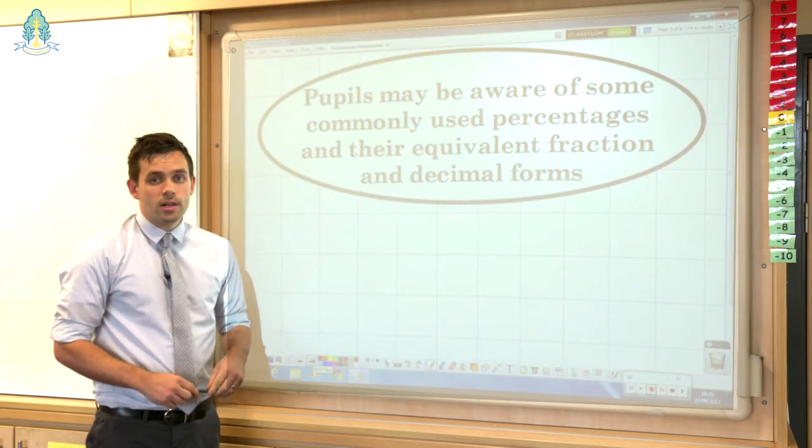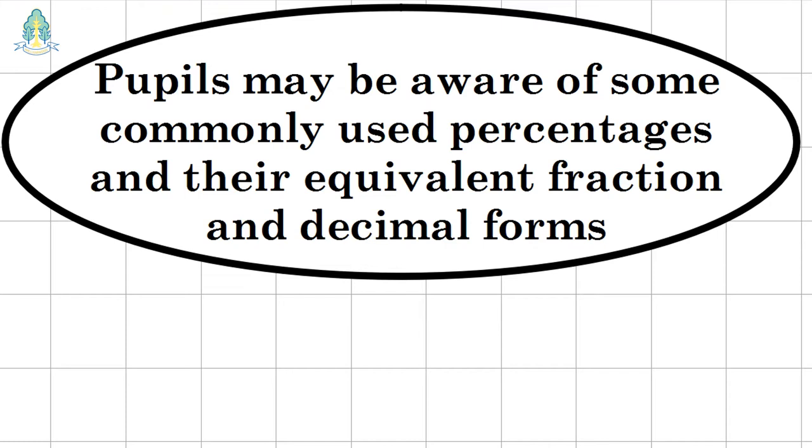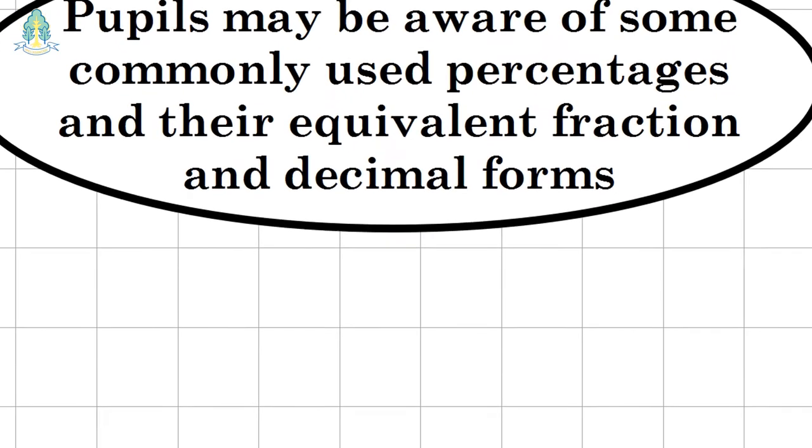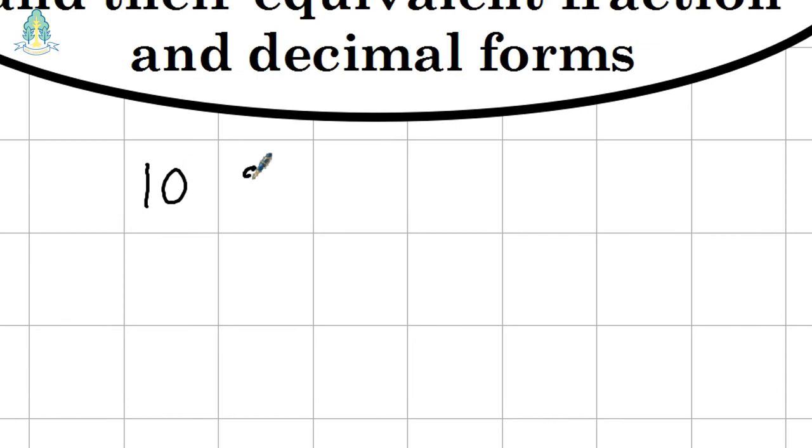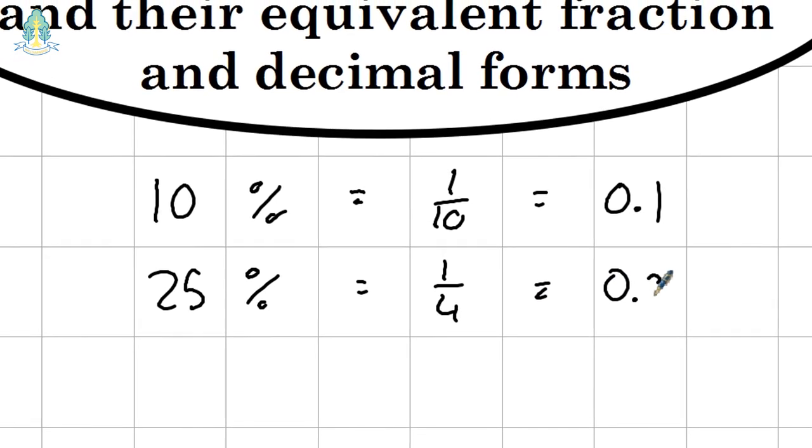Now pupils will be aware of some commonly used percentages and their equivalent fraction and decimal fraction values. For example, they could probably tell us that 10% is equal to one tenth which equals 0.1 as a decimal fraction, or that 25% equals one quarter which equals 0.25, and so on and so forth.